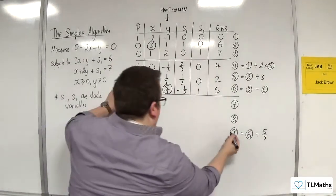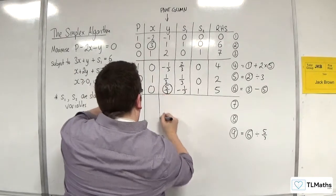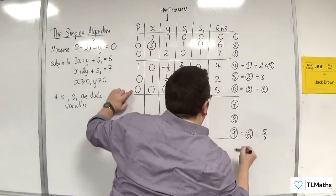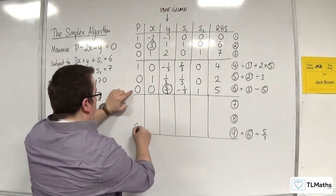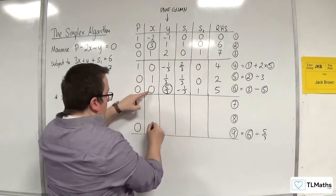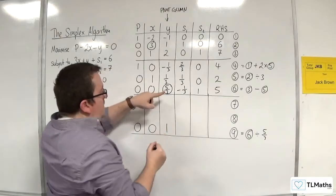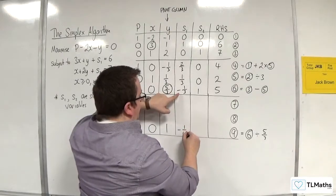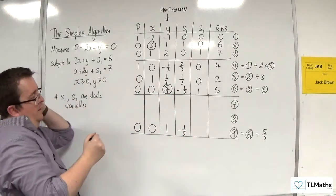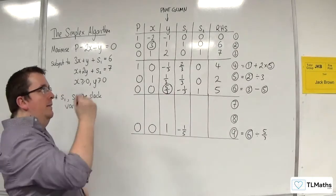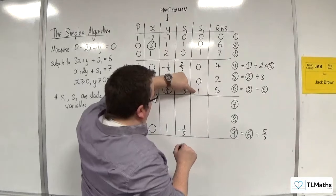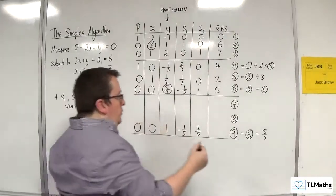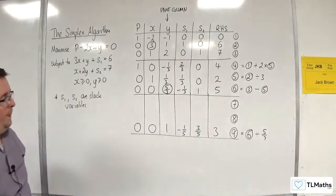So 0 divided by 5 thirds is 0. 0 divided by 5 thirds is 0. 5 thirds divided by 5 thirds is 1. Minus 1 third divided by 5 thirds is minus 1 fifth. And then we've got 1 divided by 5 thirds, which is 3 fifths. And 5 divided by 5 thirds is 3.